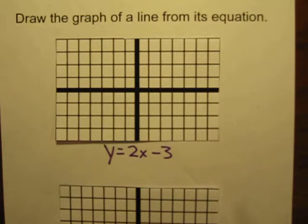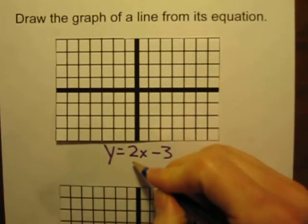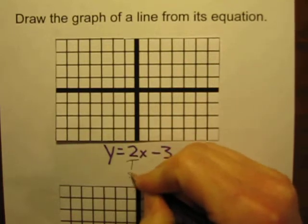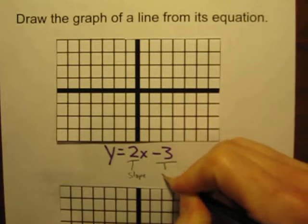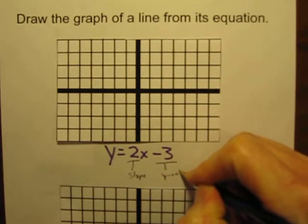First thing you want to remember when you're looking at this equation, this is in slope intercept form, so right there the 2 is going to be our slope and the negative 3 is our y-intercept.